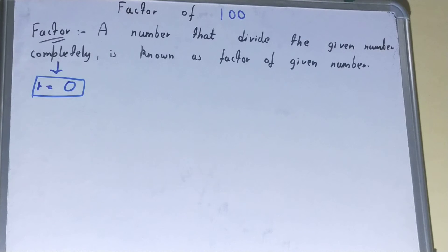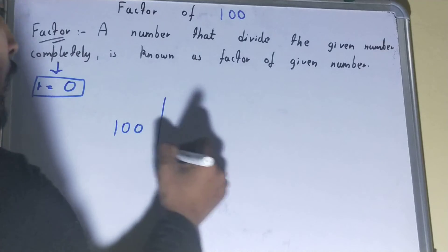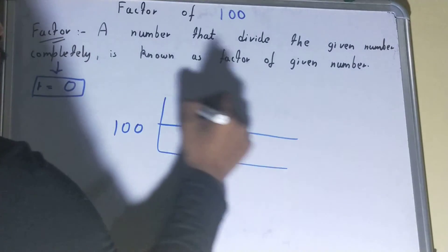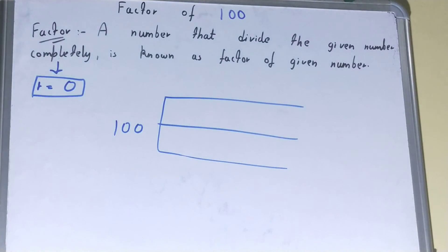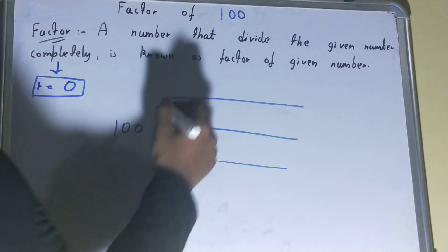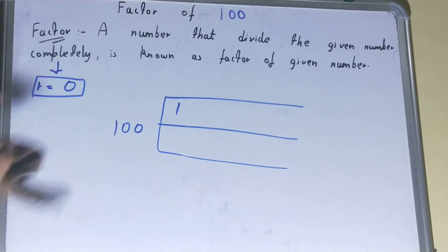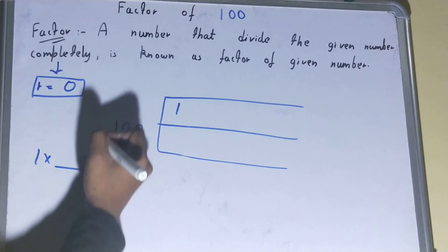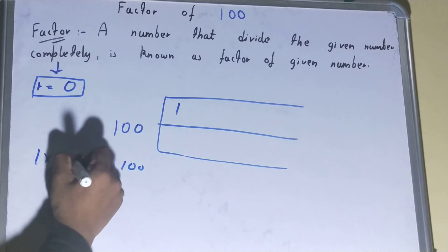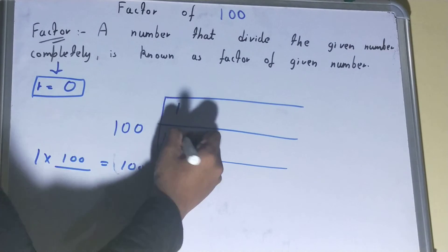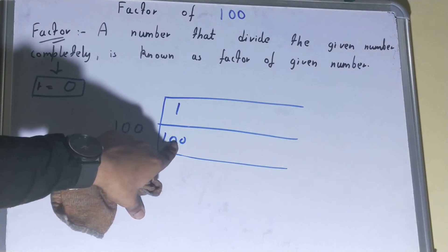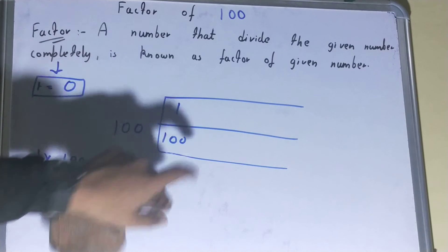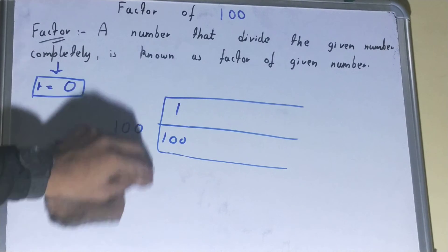Now let's find all the factors of 100. We'll use the factor pairs method. We start from the least factor of any number, which is 1. We know 1 is a factor of 100, and 1 multiplied by 100 equals 100, so 100 is also a factor. You can determine the second factor directly without performing division.